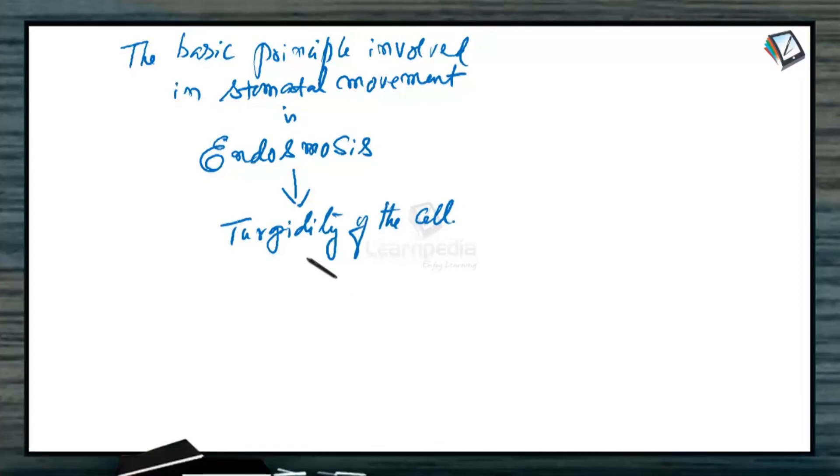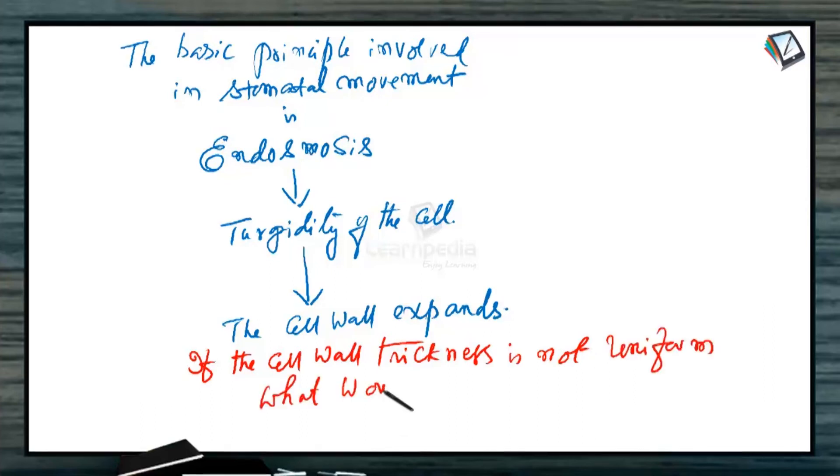Endosmosis leads to turgidity of the cell. And when the cell becomes turgid, the cell wall expands. Now, if the cell wall thickness is not uniform, what would be the result? Say, this is the cell wall thickened on one side only, and the remaining cell wall is thin. This is thin.